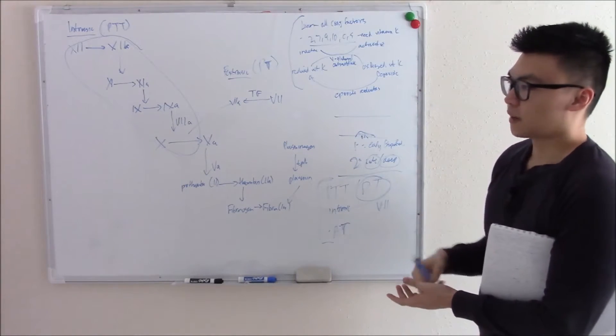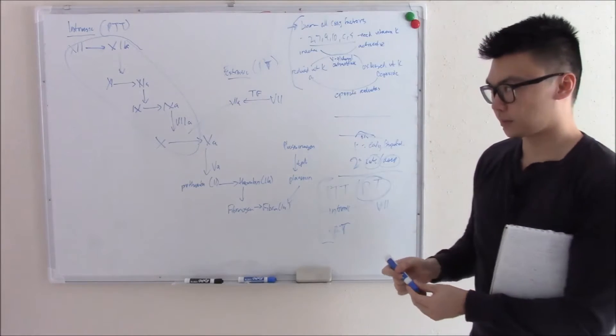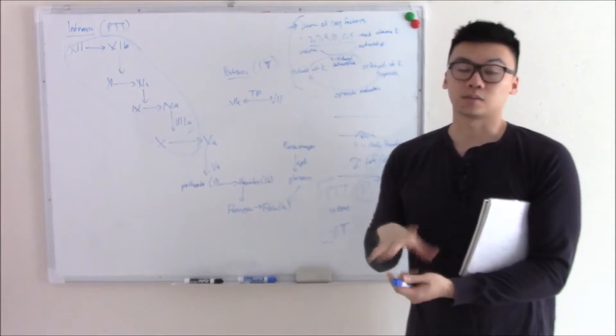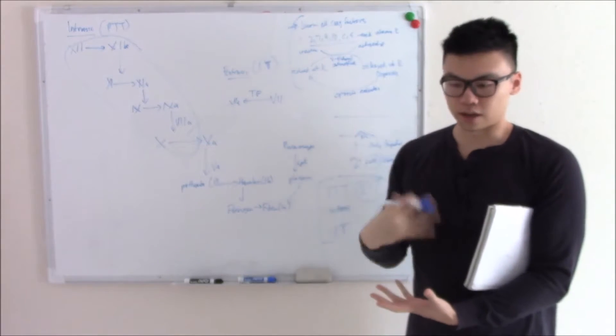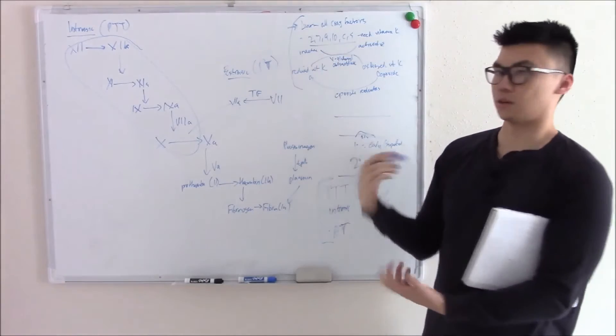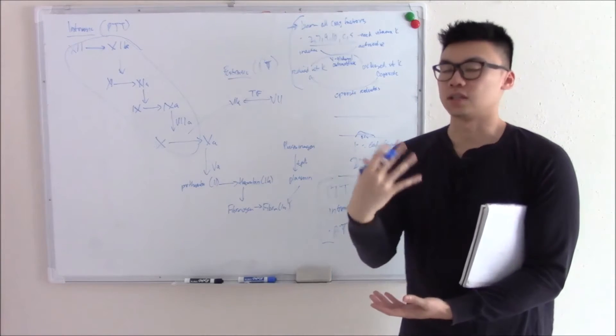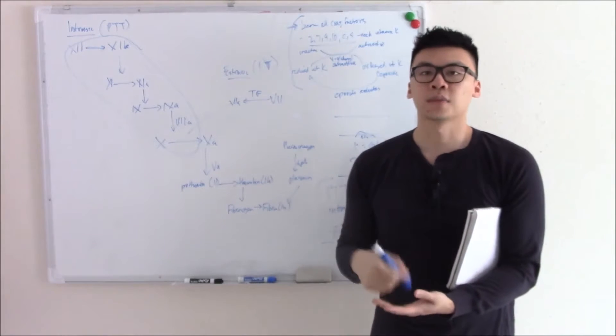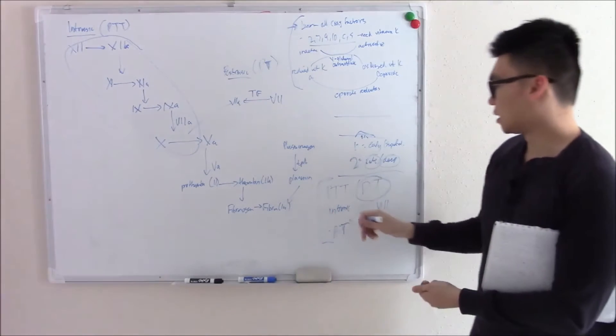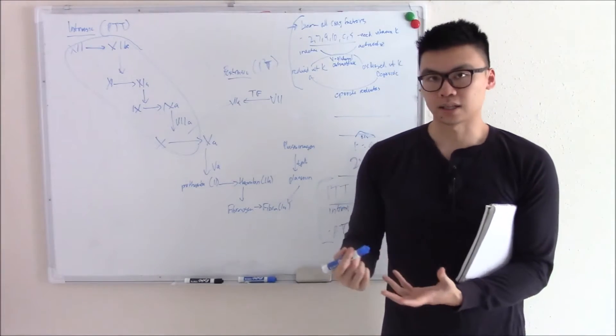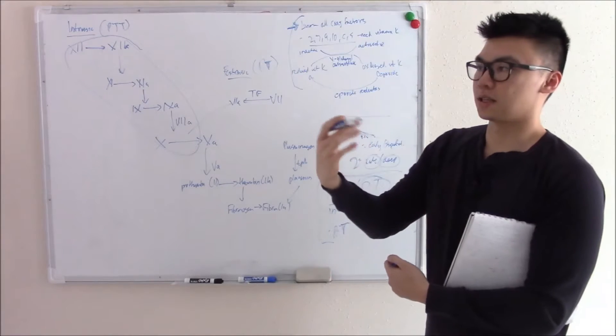Now what can cause decreased coagulation factors and bleeding? Well you can have liver disease because your liver makes your coag factors. You can have vitamin K deficiency, usually from malabsorption. A lot of your vitamin K, especially starting out when you're a baby, is made from gut bacteria. Babies when they're born don't have a lot of gut bacteria. That's why we give them intramuscular vitamin K just so they don't start bleeding out. In adults usually more seen in malabsorption but you can have decreased gut bacteria if you're taking prolonged antibiotics. That's a common test question. So liver disease can cause decreased coagulation factors and bleeding.